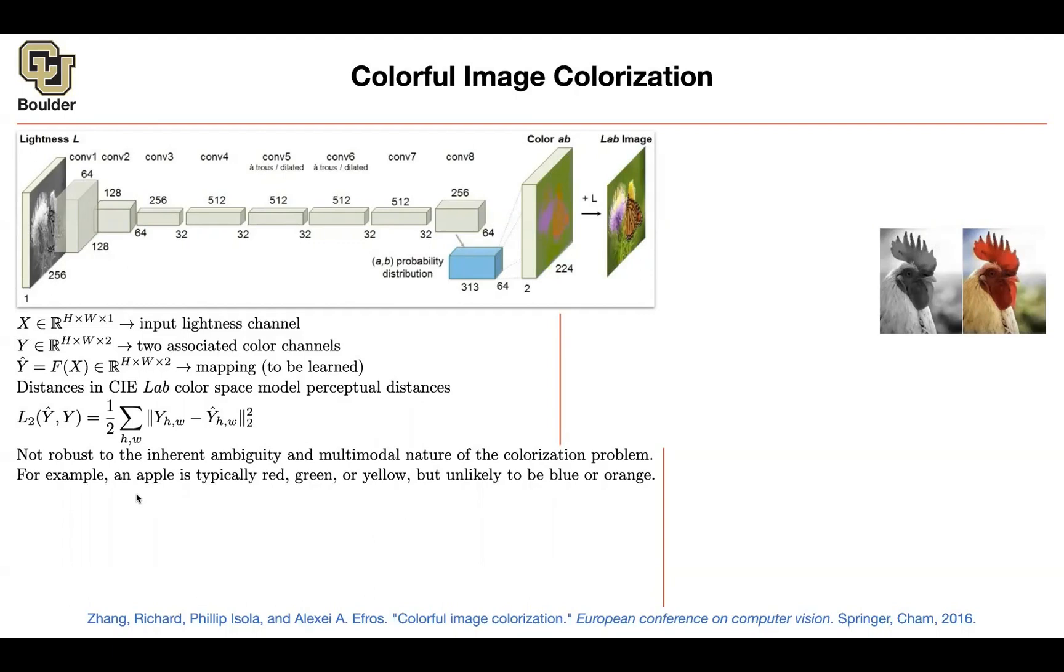An apple can only take a handful of colors, like red, green, yellow. An apple should not be blue or orange. Maybe there are some weird apples out there, but they're outliers. And this is a multimodal distribution. Maybe it's not a good idea to model that with a Gaussian distribution.